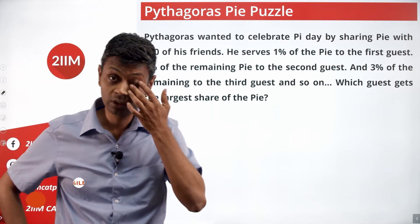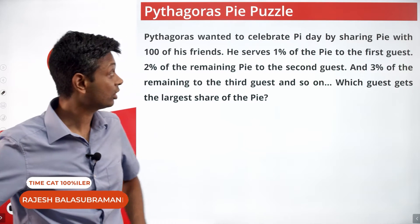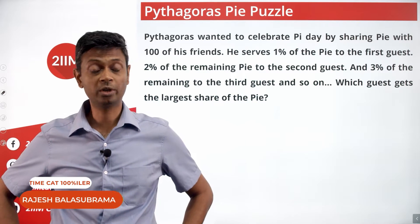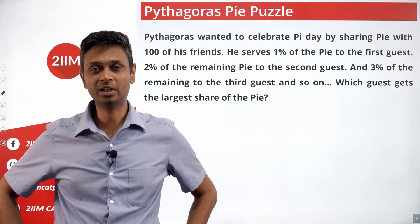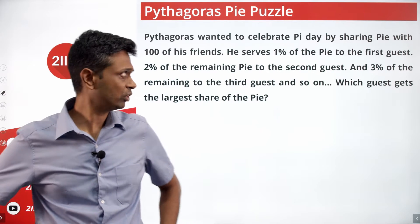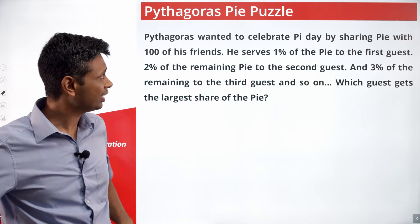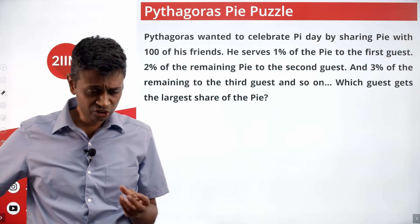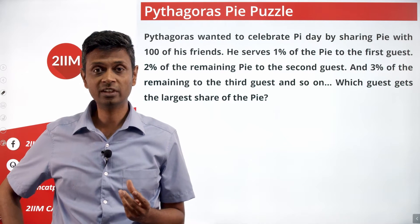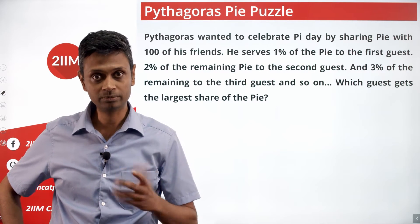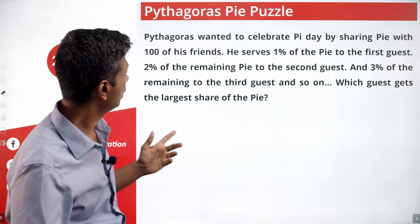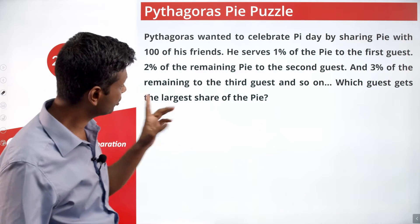Beautiful question. If you have not tried this question, I would strongly urge you to hit pause on this video and try it. You're getting increasing shares of the Pi when lesser and lesser is available. The first guest gets 1% of the Pi.